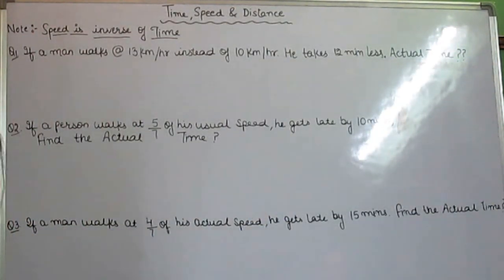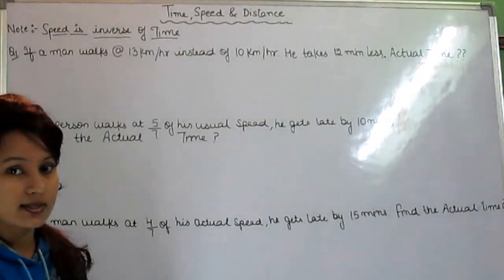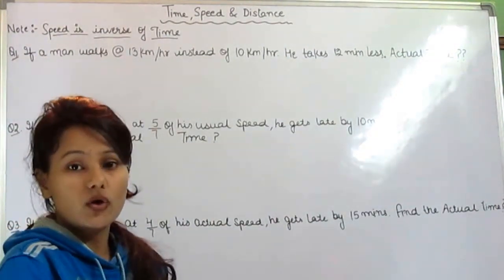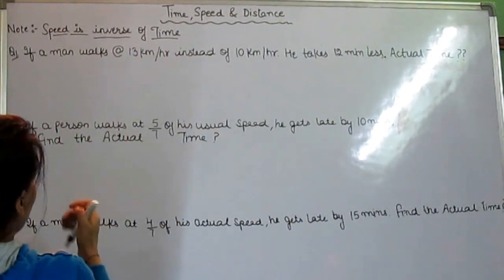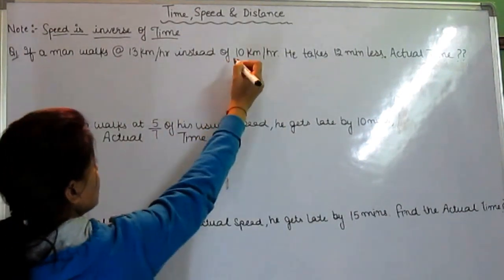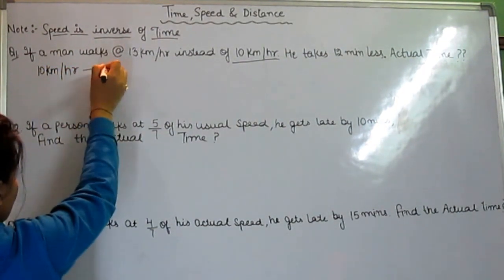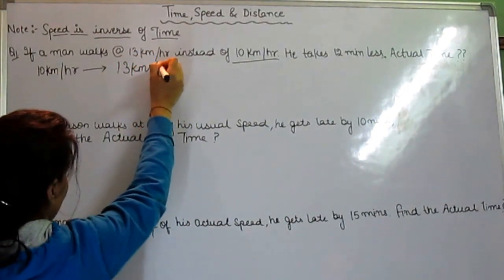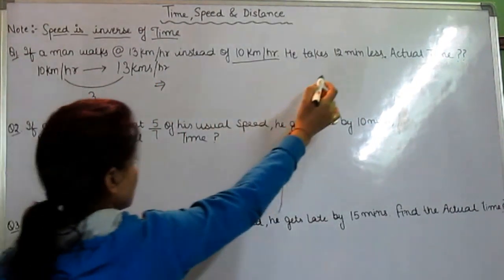Our first question: if a man walks at a speed of 13 km per hour instead of 10 km per hour, he takes 12 minutes less — what is the actual time? The way to solve this is similar to what I taught in the previous video on speed and distance. His actual speed is 10 km/h, but now he walks at 13 km/h. The gap between the two speeds is 3, and the time difference given is 12 minutes.